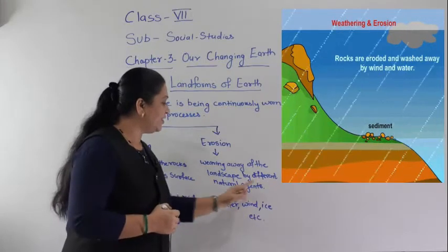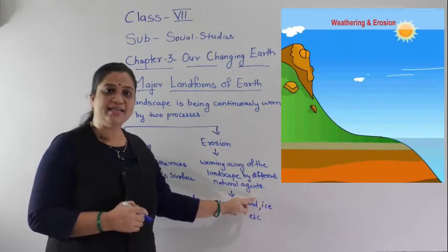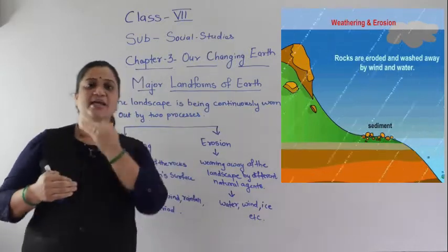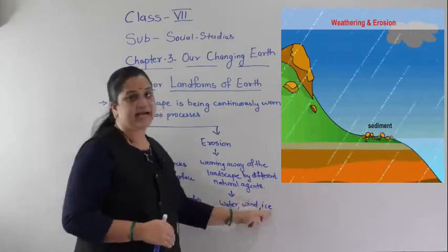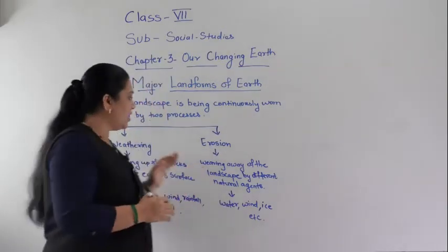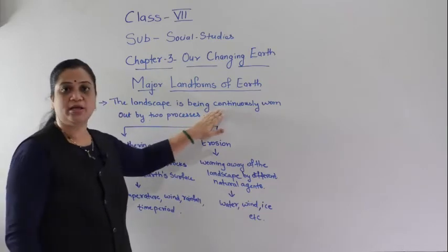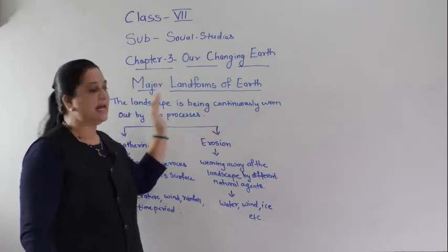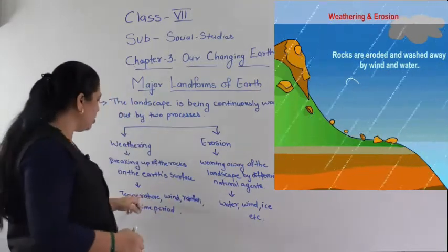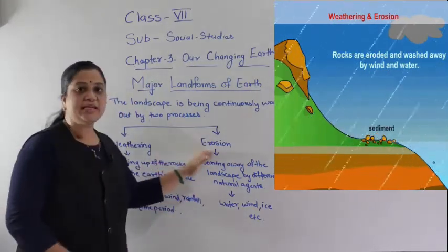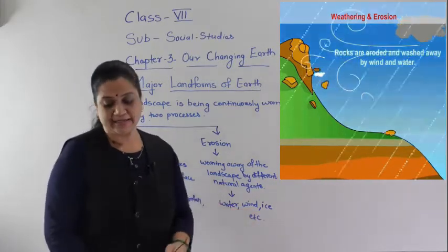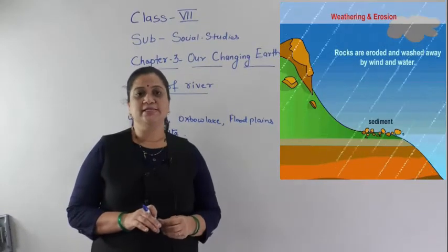The second process is erosion. Erosion is the wearing away of the landscape by different natural agents. When rocks break down into small sediments, they are eroded by the action of water, wind, and ice. So weathering breaks the rocks by the action of wind, temperature, and rainfall, while erosion carries away the material by the action of water, wind, and ice.